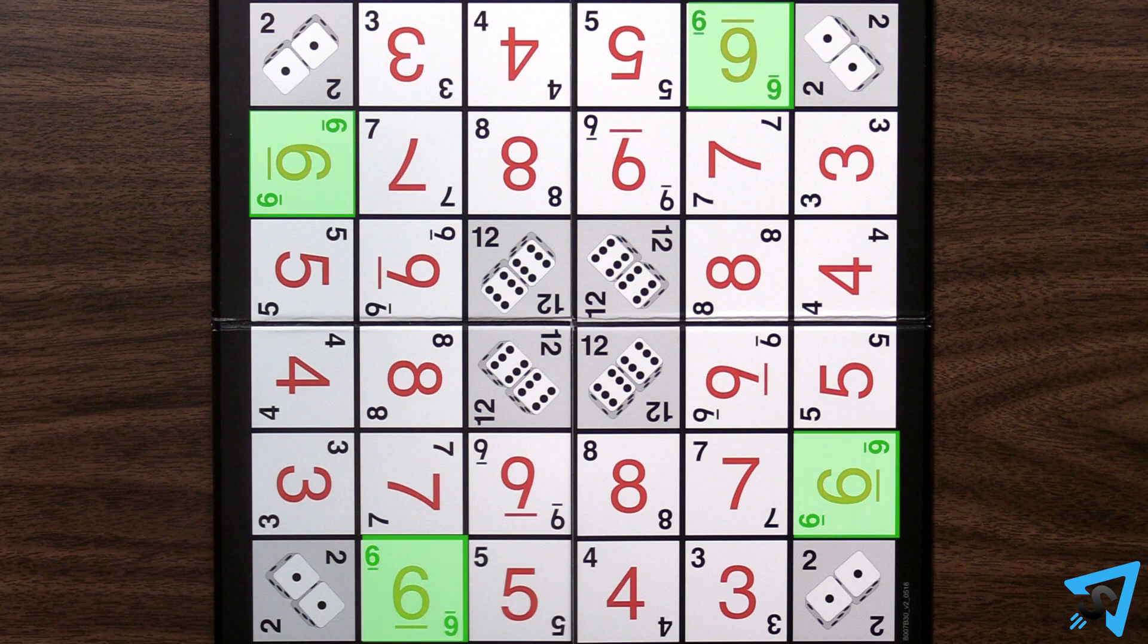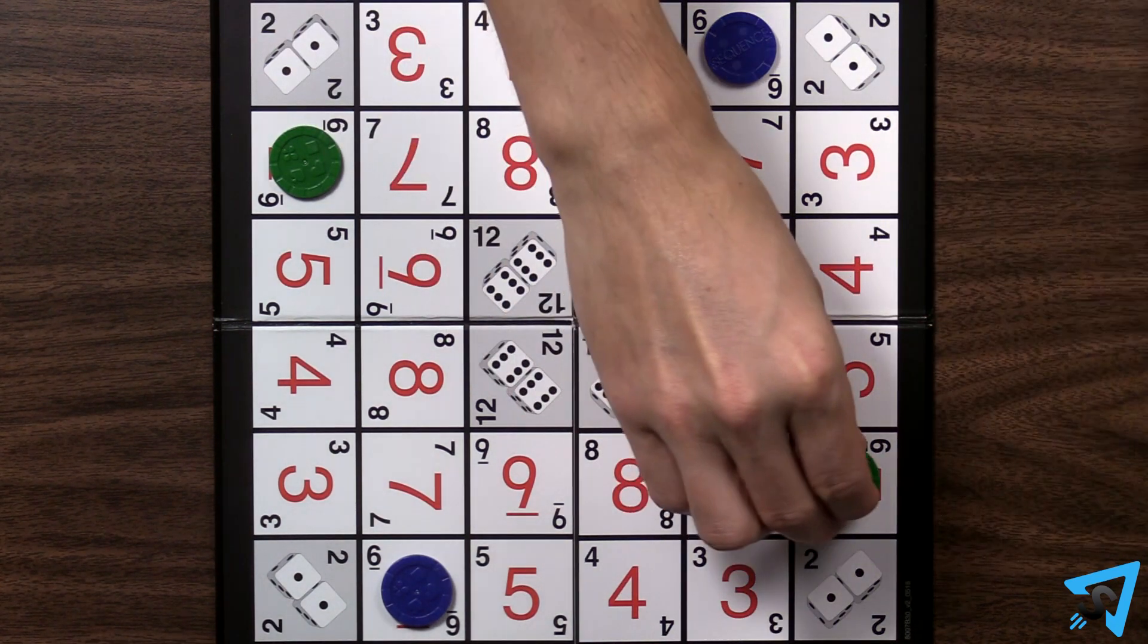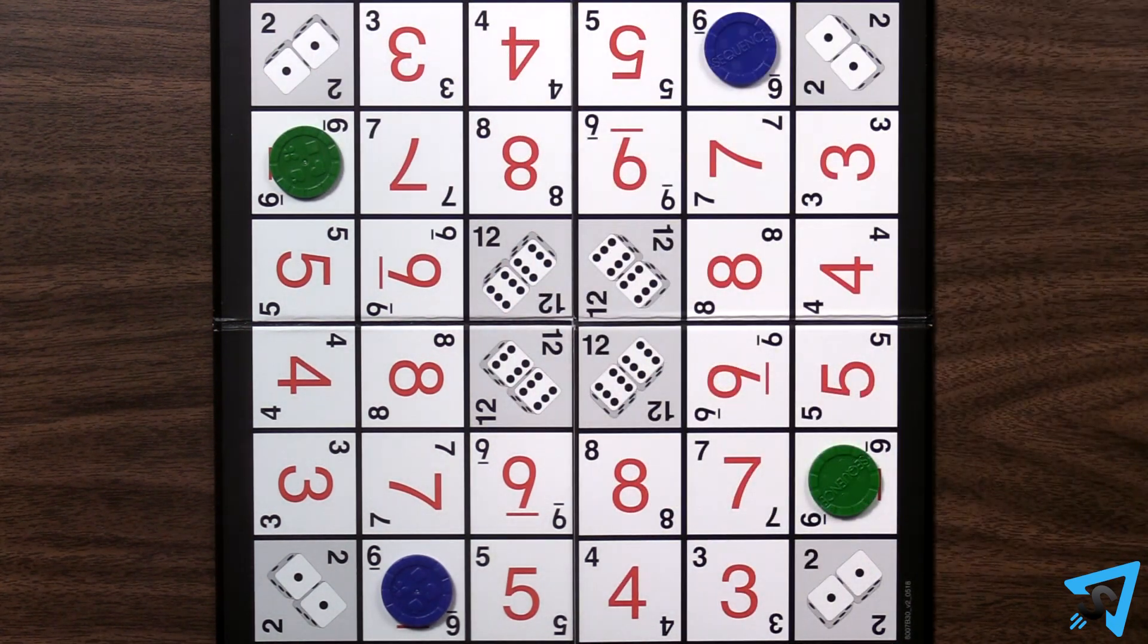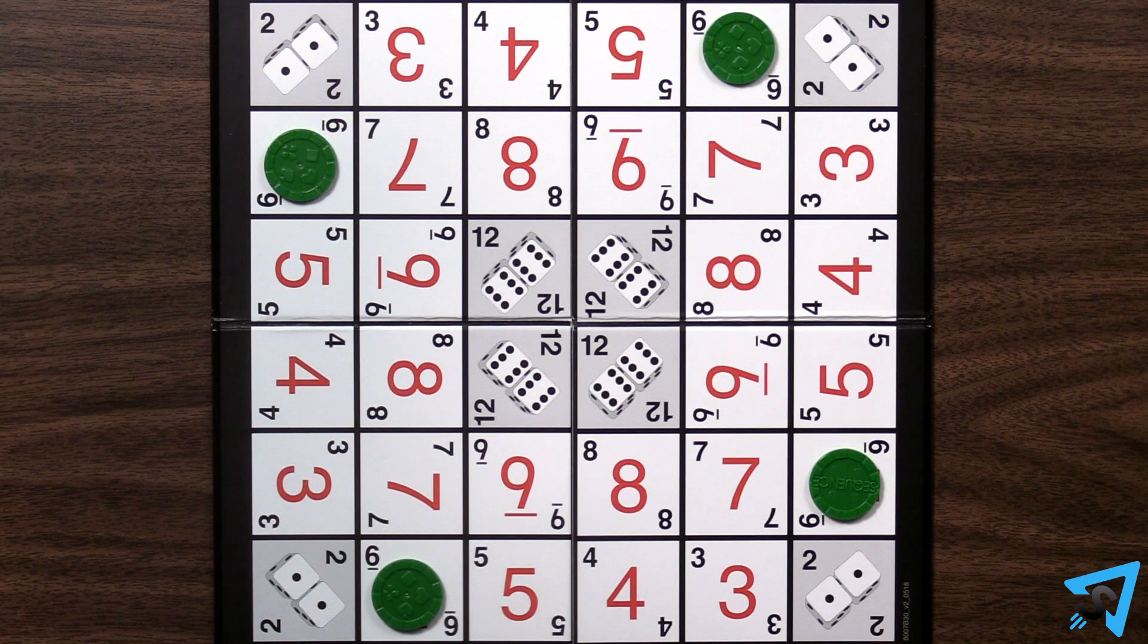Each number has four spaces on the board. If all four spaces for the number rolled are occupied, you may replace one of your opponent's chips with one of your own. However, if you own all four spaces, then you end your turn without playing.